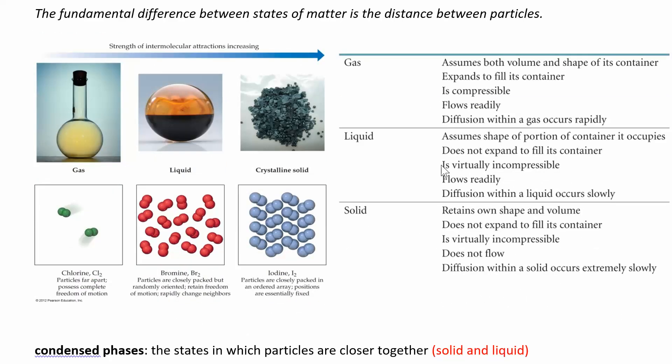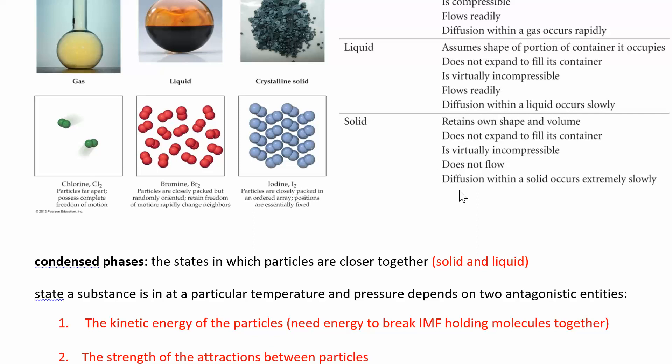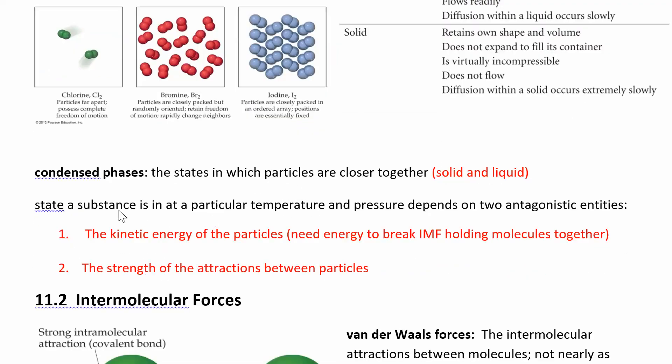So those are just some differences between solids, liquids, and gases. And so a state of a particular substance, whether you have a solid, liquid, or gas is really going to depend on two things at a particular temperature and pressure, two different forces that are acting against each other, that's what antagonistic means, they're acting against each other.